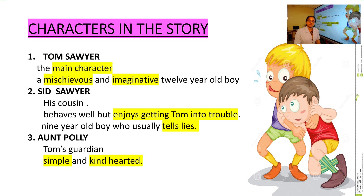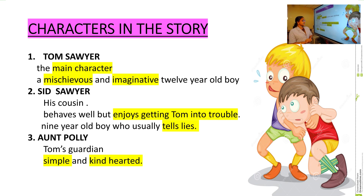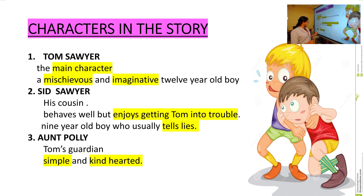Now who is Tom Sawyer? Tom Sawyer is actually the main character in the story — a very mischievous and imaginative boy, 12 years old. Then we have Sid Sawyer. Sid Sawyer is Tom Sawyer's cousin, who has good behavior but at times enjoys putting Tom into trouble. And then there is Aunt Polly, Tom's guardian, who is a very simple and kind-hearted person.